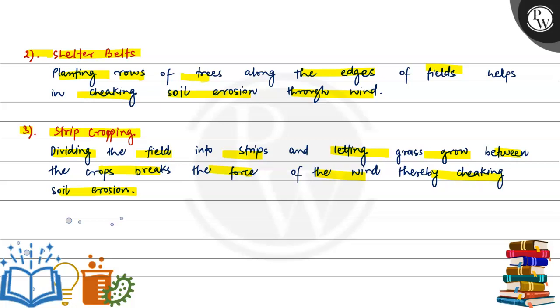In strip cropping, grass is planted in between the crops. This ensures that the wind cannot carry away the soil and soil erosion doesn't happen.